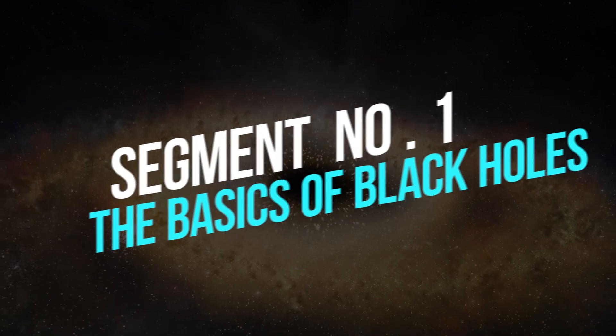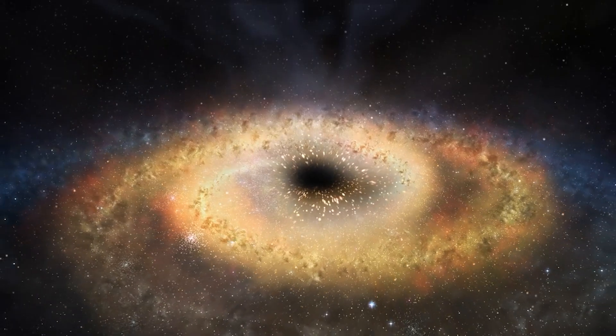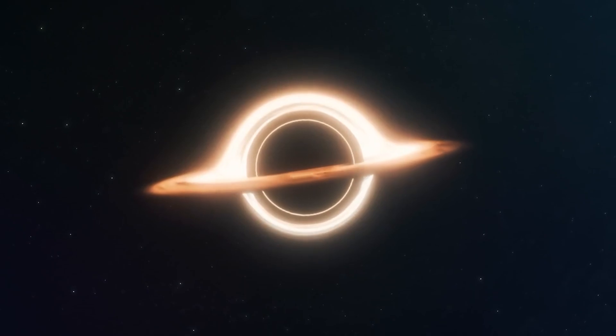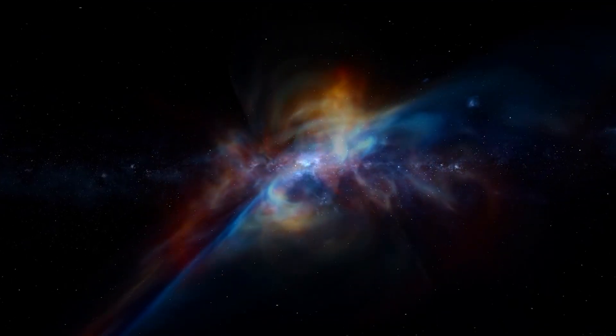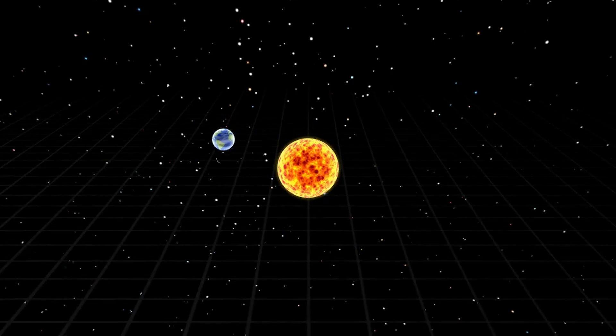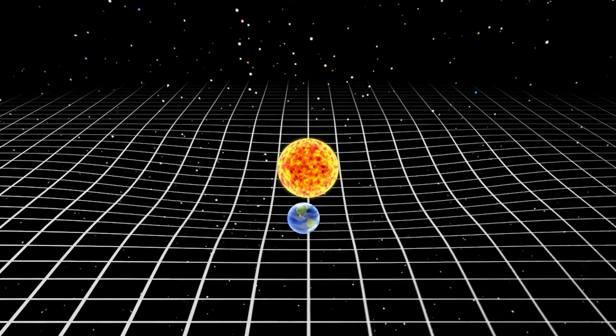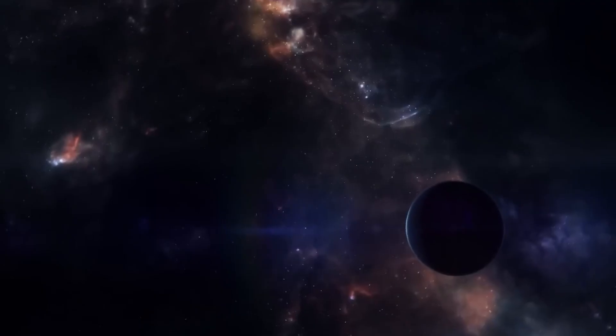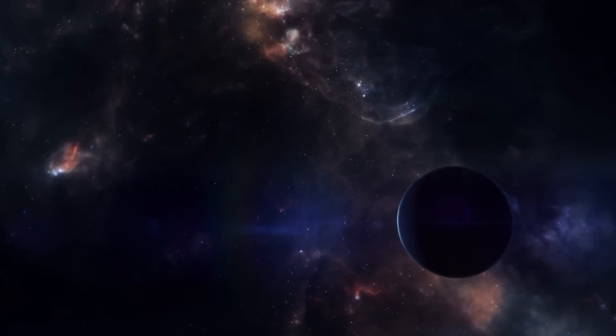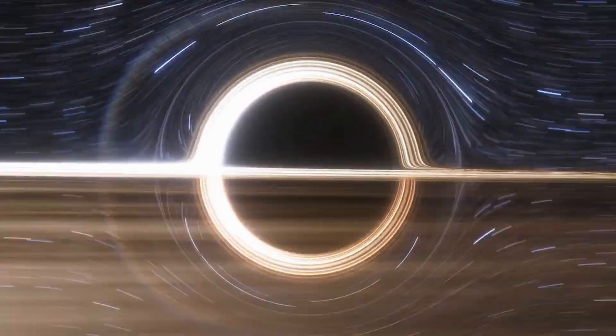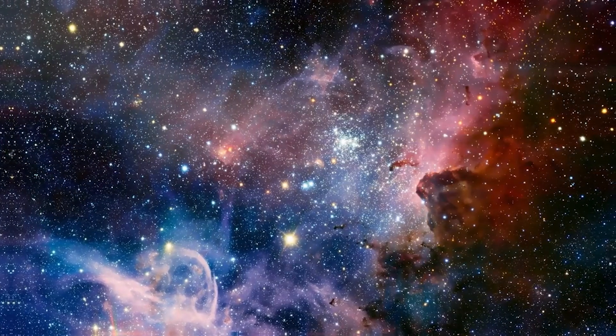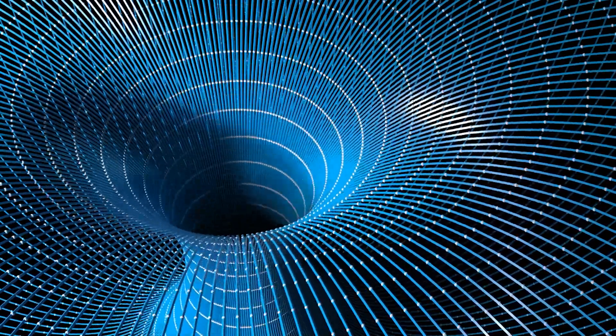Segment 1. The Basics of Black Holes. Before we plunge into the unknown, let's grasp the fundamentals. When enormous stars reach the end of their lives and collapse under their own gravity, black holes develop. This collapse is so intense that it creates a region in space where the gravitational pull is incredibly strong that nothing, not even light, can escape the event horizon.